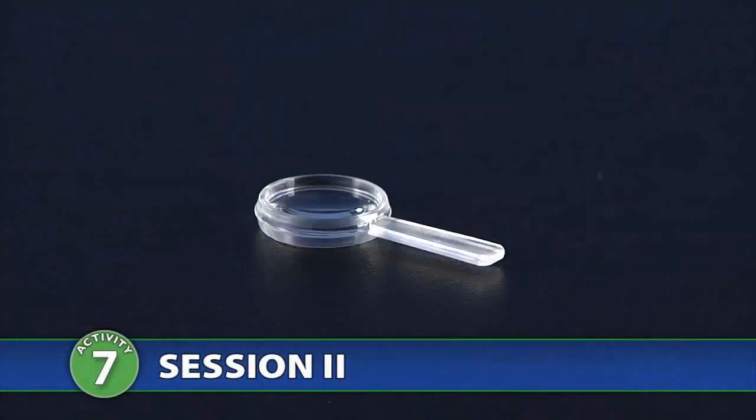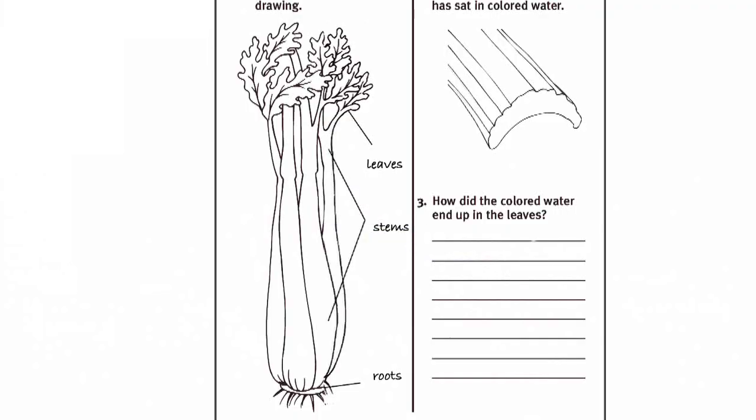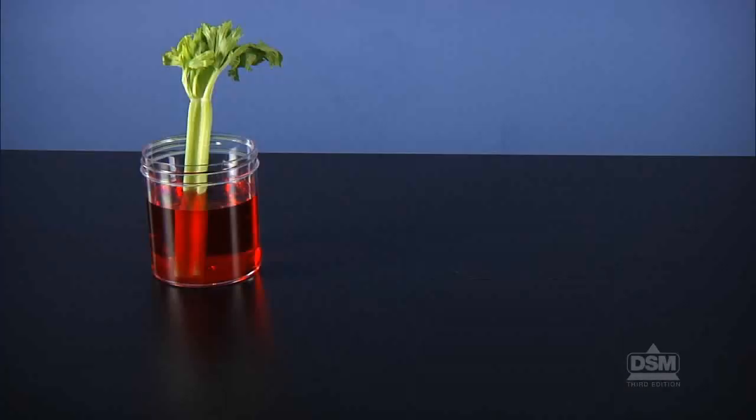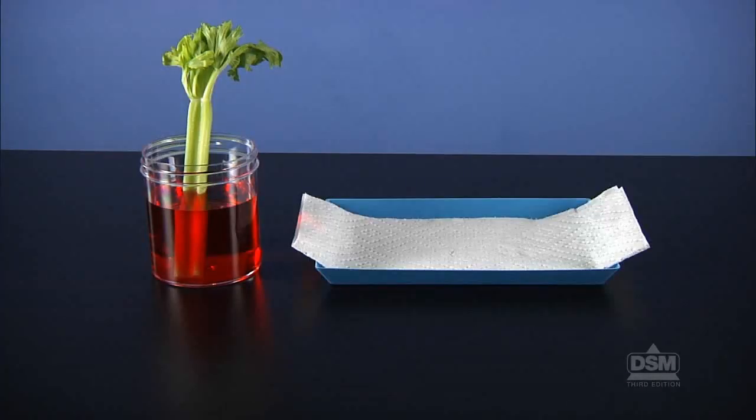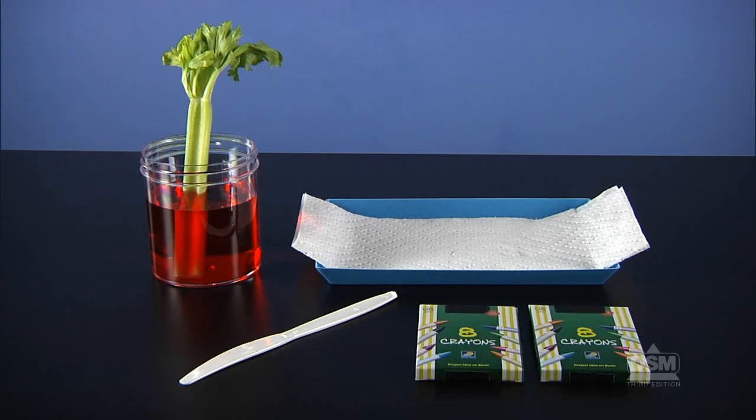To prepare for Session 2, each student will need a magnifier and his or her copy of Activity Sheet 7 from Session 1. Each team of four will need its celery stalk and colored water, a tray lined with a paper towel, a plastic knife, and two boxes of crayons.